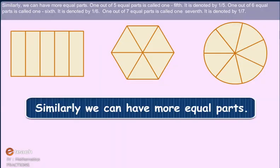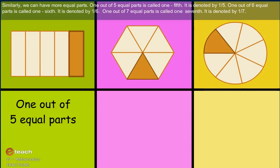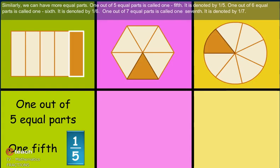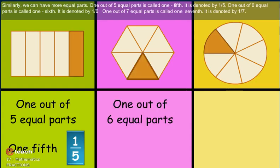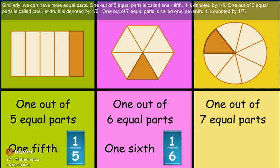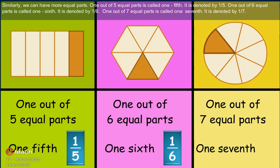Similarly, we can have more equal parts. One out of five equal parts is called one fifth. It is denoted by one by five. One out of six equal parts is called one sixth, denoted by one by six. One out of seven equal parts is called one seventh, denoted by one by seven.